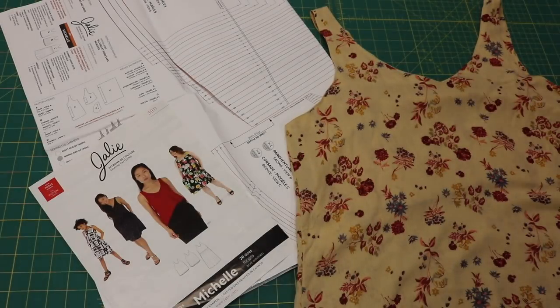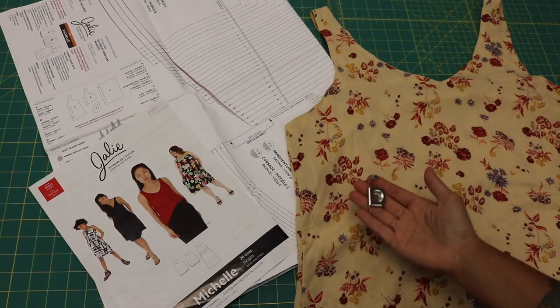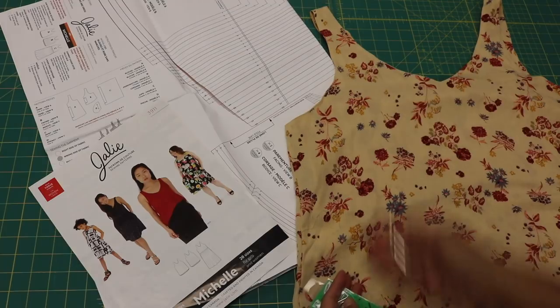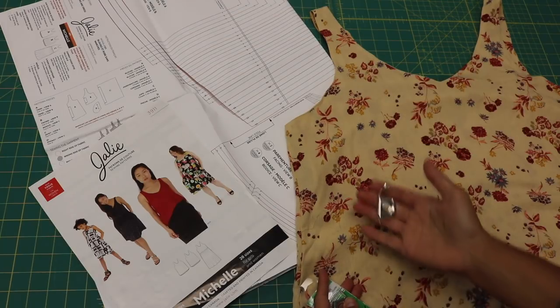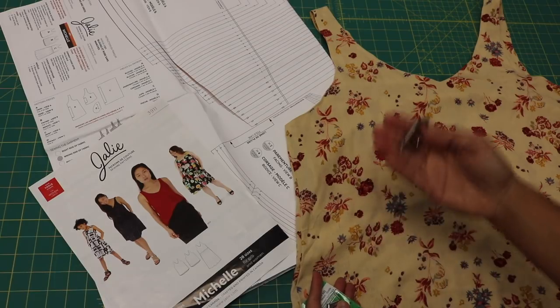Alright, so this tip is going to be for using a magnetic seam guide when you need to follow some type of edge for a specific seam allowance. Now, you may be thinking why do you need this if you're a quilter? You know, we most often use a quarter of an inch seam allowance.